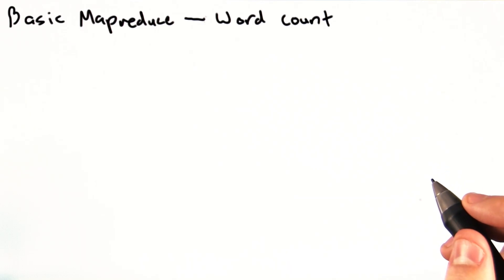Here is one way to explain the MapReduce programming model. Say that I wanted to count the number of occurrences of each word that appears at least once in a document.